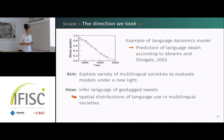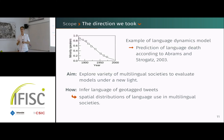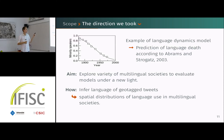This is a model where we consider two languages and people can either be monolingual in one language or the other. It considers the prestige of the languages — how much a language is favored within a society by global institutions, the state, education — and another parameter called volatility.